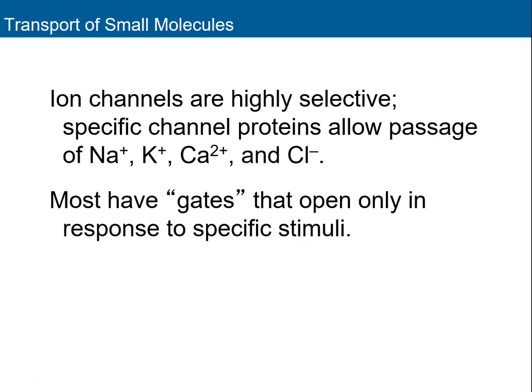Ion channels are selective, meaning there is a specific channel for each ion type — specific chloride channels, sodium channels, potassium channels, and calcium channels. Most of these have gates, so they will only open in response to specific stimuli. The movement of sodium and potassium is important for generating an action potential, but you don't want that to happen all the time, so these channels are regulated.